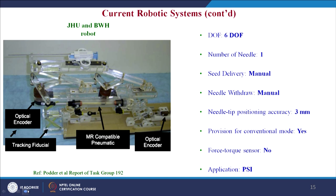The next system was developed in collaboration by the Engineering Research Center at Johns Hopkins University and the Department of Radiology at Brigham and Women's Hospital, Boston. It is a numerically operated 6-degrees-of-freedom robotic system for placement of a transperineal prostate needle in a 3T closed-bore MRI. It has one needle, manual seed delivery and withdrawal, needle tip positioning accuracy of 3 mm, provision for conventional mode, and no force-torque sensor. The application is prostate seed implantation.